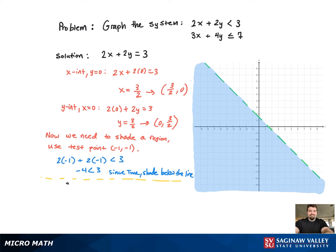And now we're good to move on to the second inequality. For this one, we're just going to use a couple points that we know are on the line. If you just plug in 1, 1, you see you get 7 equals 7.